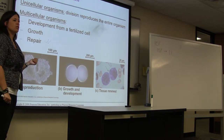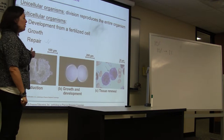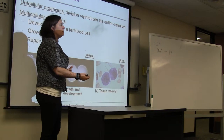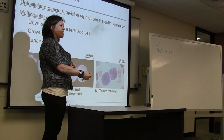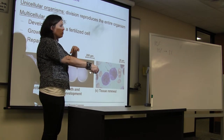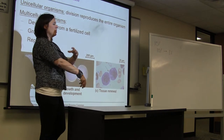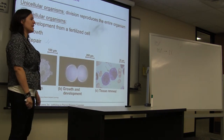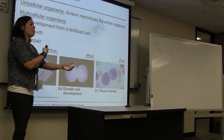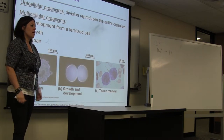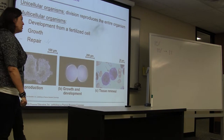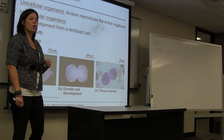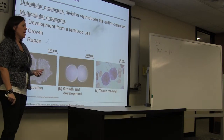Finally, we can also use cell division in repair. If we break our arm, all those new little bone cells are going to come in and try to replace the broken bone. Same thing if I cut myself on my skin — there's going to be a repair process. So repair, development, and growth are the three main reasons why we use cell division.